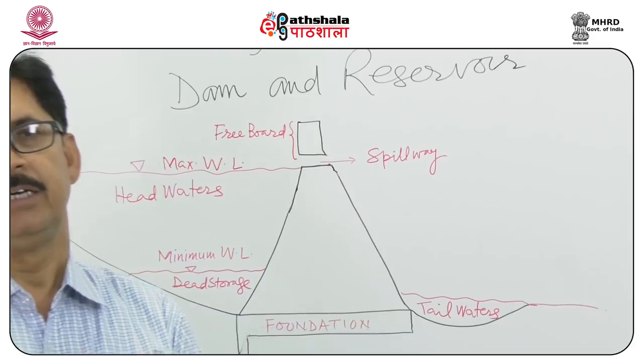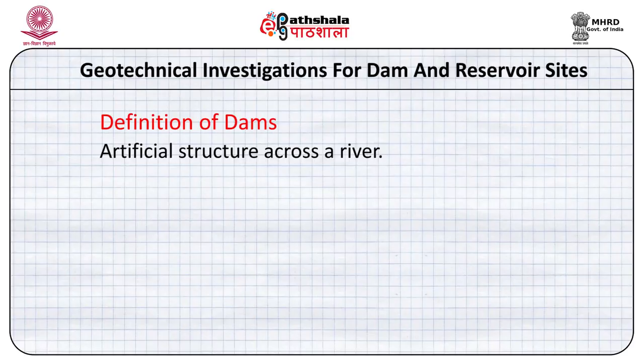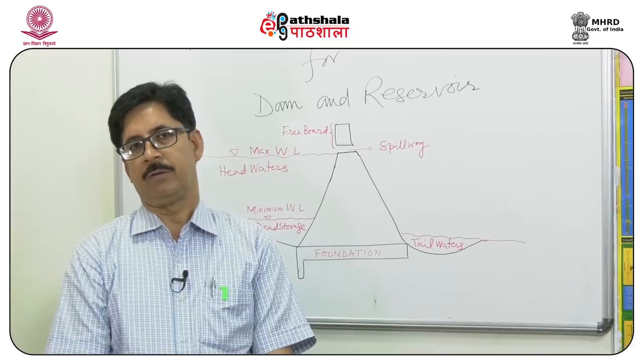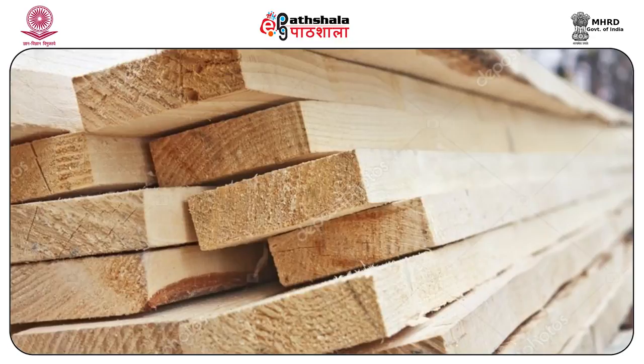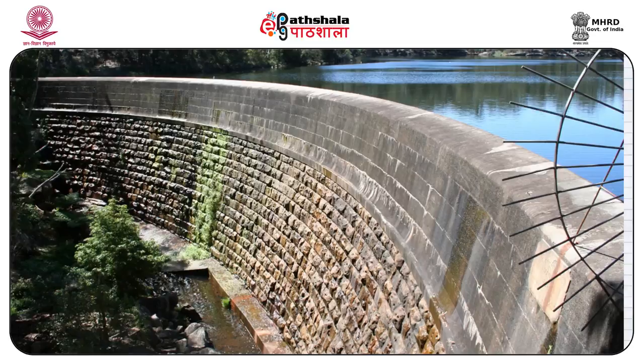Dams are defined as artificial structures made across a river in a river valley using different kinds of material. We can use wood locks, wood planks, steel planks, rocks, earth, and masonry for making dams.